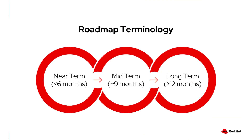Each section will be broken down into three subsections. Near-term updates are slated for less than six months, mid-term updates are approximately around nine months delivery time, and long-term updates are a year out or greater.